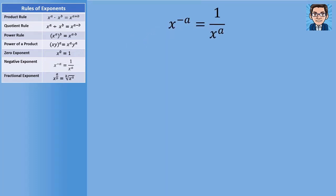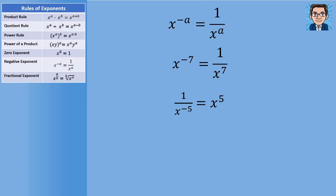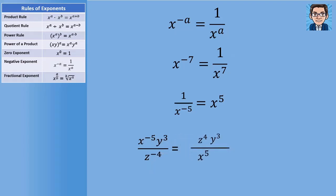The next rule addresses negative exponents. If something's to a negative exponent, it's the same as one over that same thing to a positive exponent. So x to the negative 7th is the same as one over x to the positive 7th. One over x to the negative 5th is the same as x to the positive 5th. We can use this to get rid of negative exponents — moving x to the negative 5th from the numerator to the denominator makes it positive 5, and moving z from the denominator to the numerator makes it positive 4.